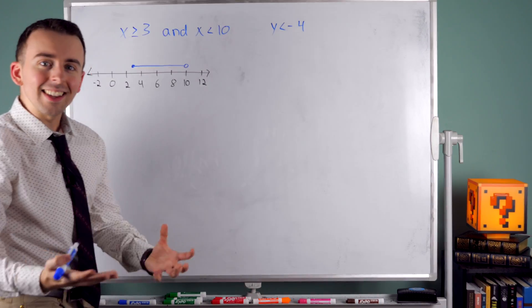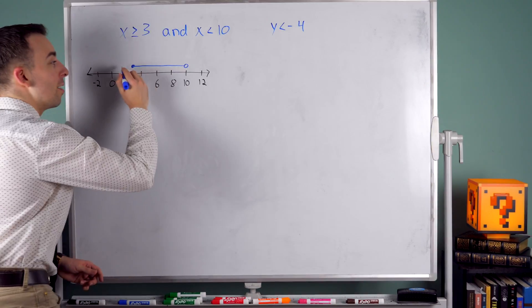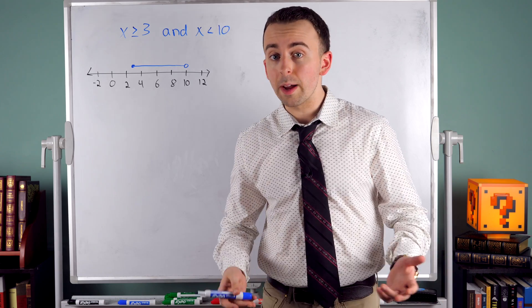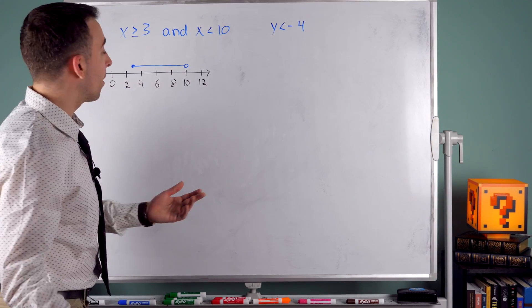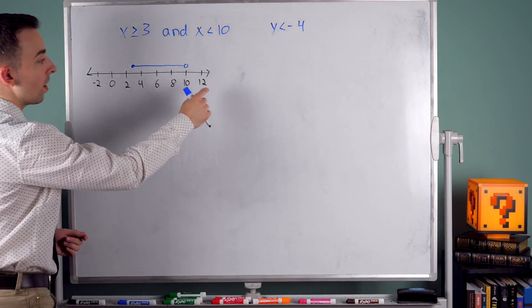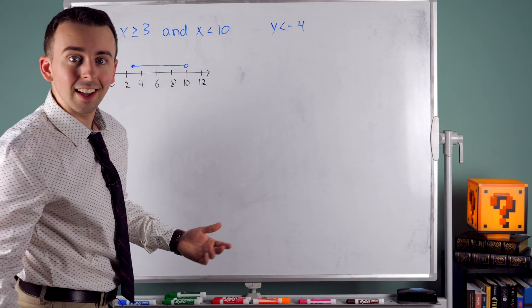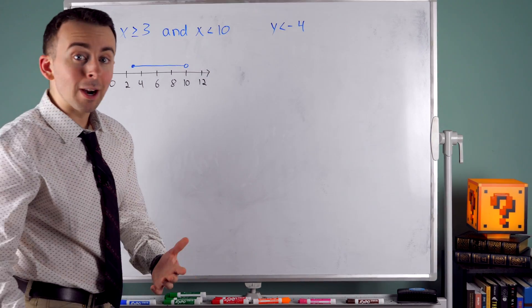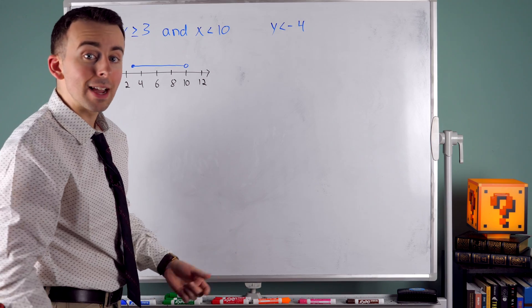The open circle tells us we're stopping at 10 and not including 10. The solid circle at 3 tells us we're stopping at 3 and we're including 3. This is a visual representation of all numbers that are at least 3 but also less than 10. You can see how this AND inequality gives us a stopping point. Does negative 2 satisfy the inequality? No — it's less than 10, but it's not greater than or equal to 3. A number like 12 is ≥ 3, but it's not less than 10. A number like 6 is at least 3 and less than 10. A number has to satisfy both parts of an AND inequality to be a solution.